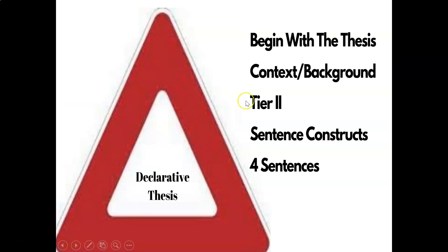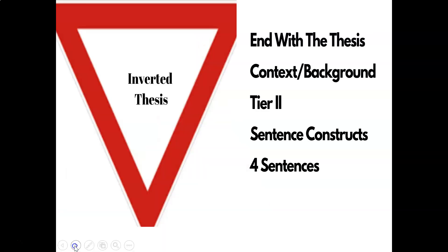In the declarative form, you begin with the thesis, but we don't want to drop terms and devices right out of the gate because you need some context and background first. So we skip to the inverted: three sentences of authorial intent, then one sentence on how the author constructs meaning — you end with the thesis. You've got to provide a little context and background without being overly plot summative. We don't want it to read like a CliffsNotes summation.